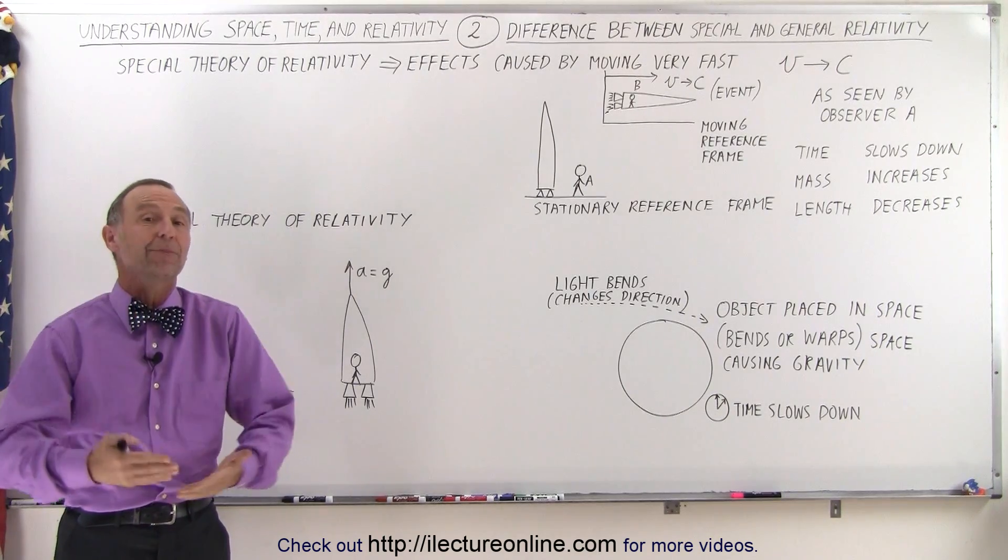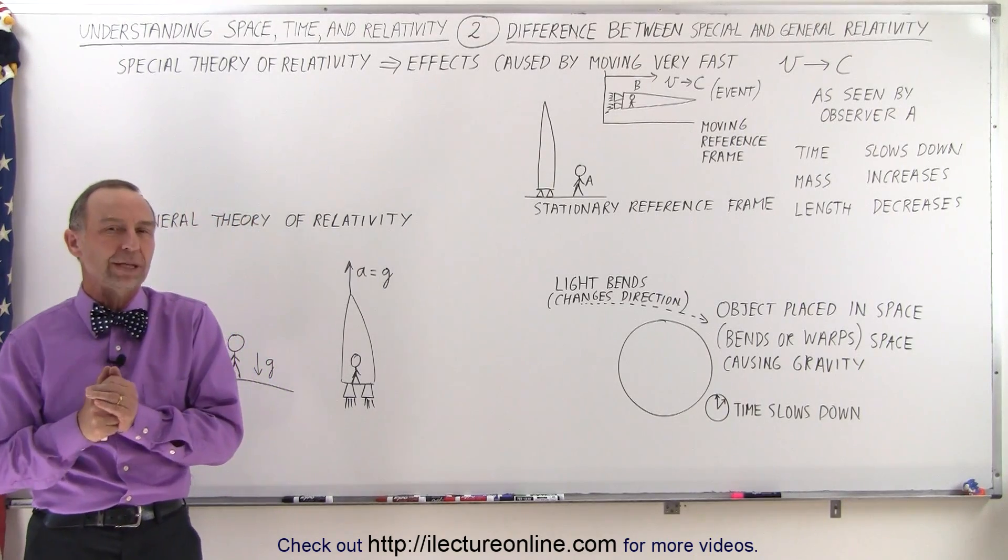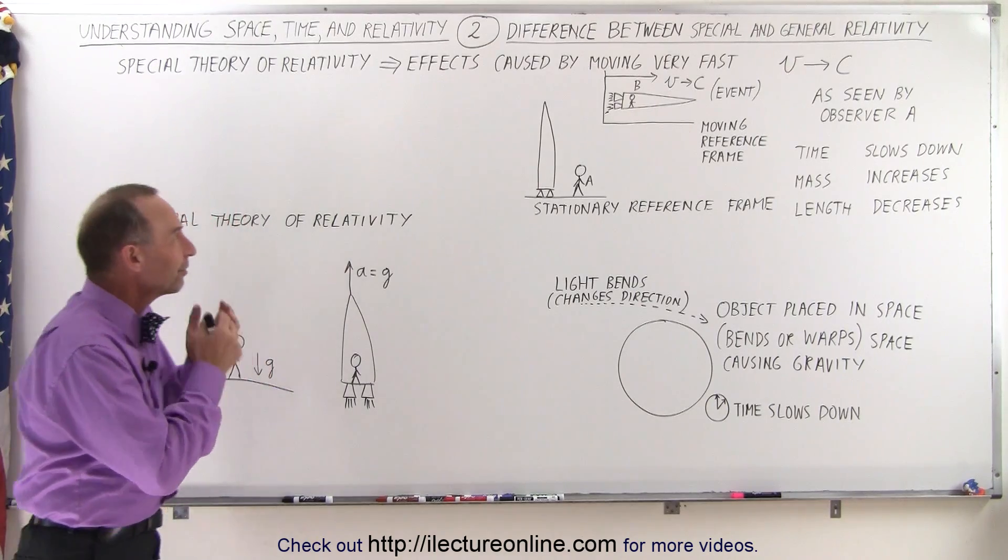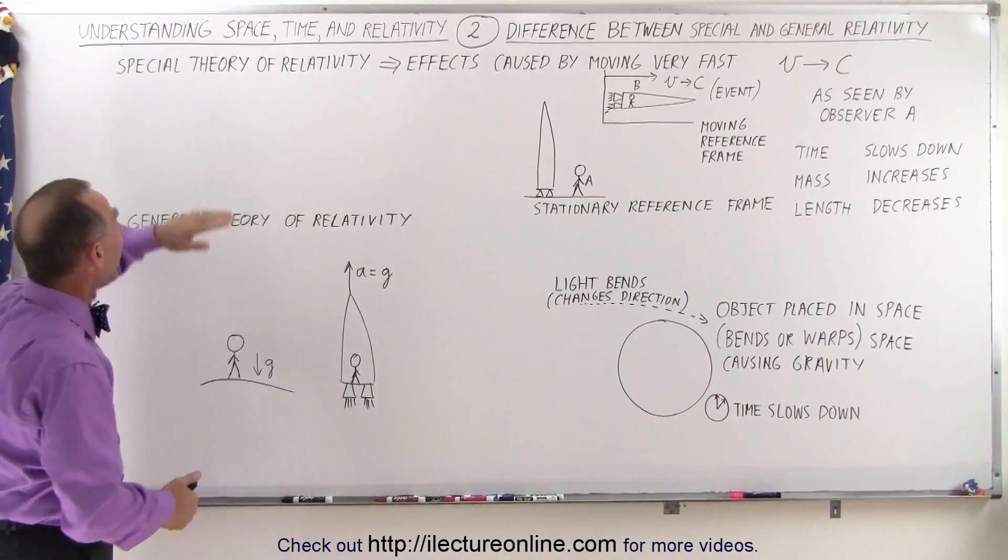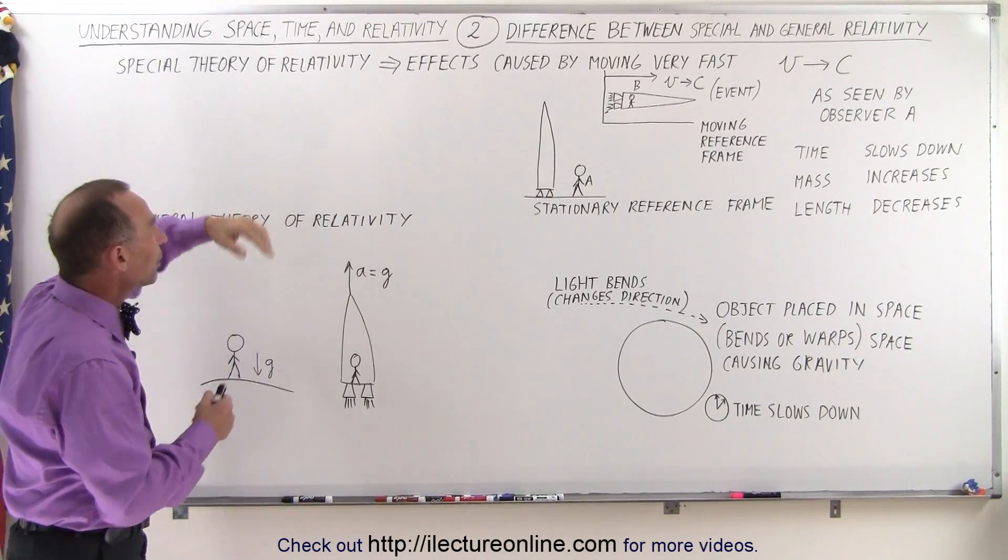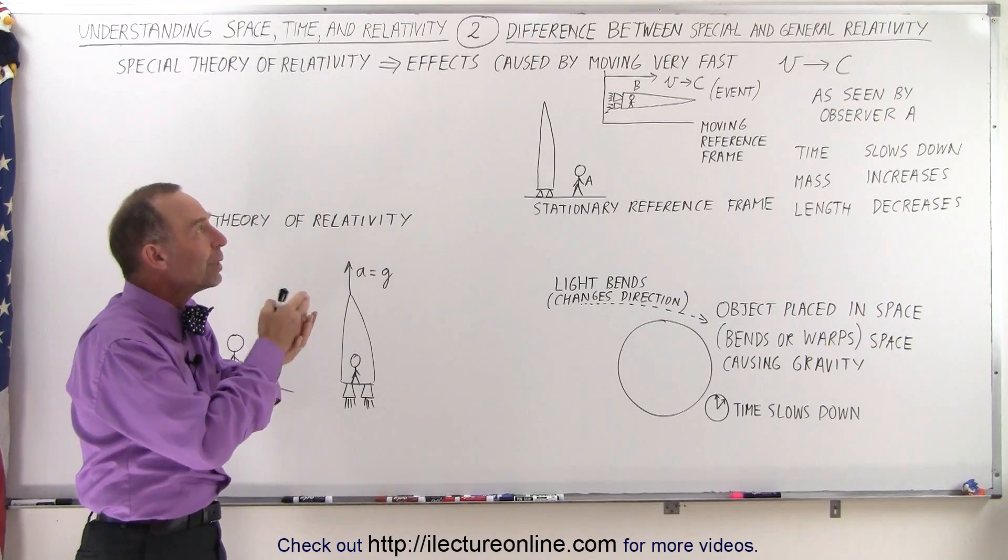There are indeed two types of relativity: general relativity and special relativity. How are they different? In the most basic terms, they're different in two ways. One way is that special theory of relativity deals with the effects that you see or observe when you're moving really fast.